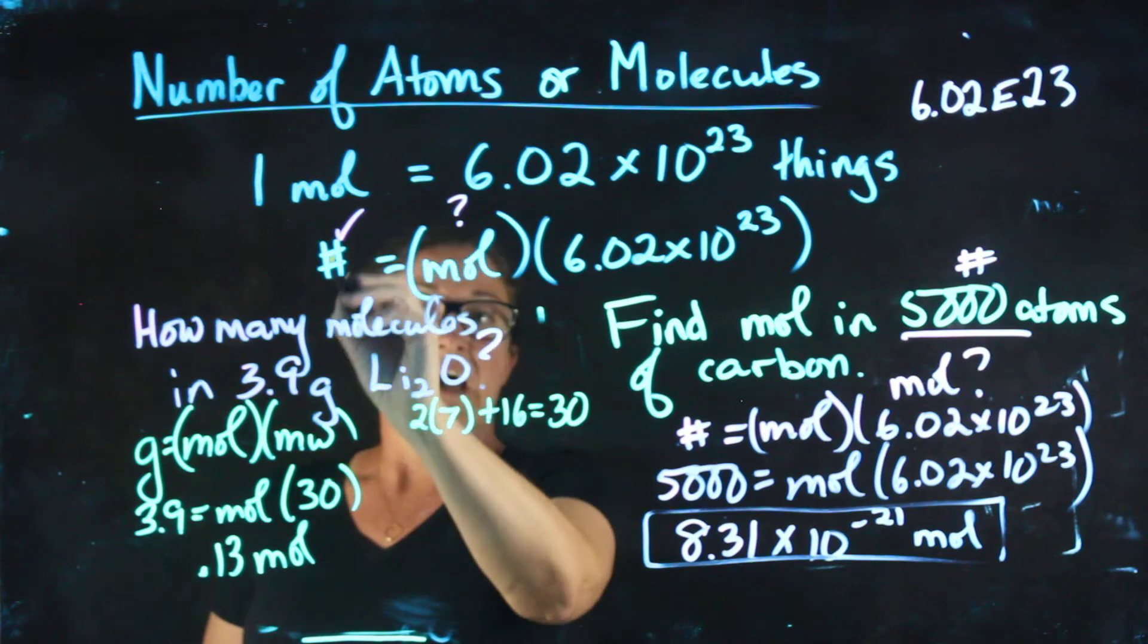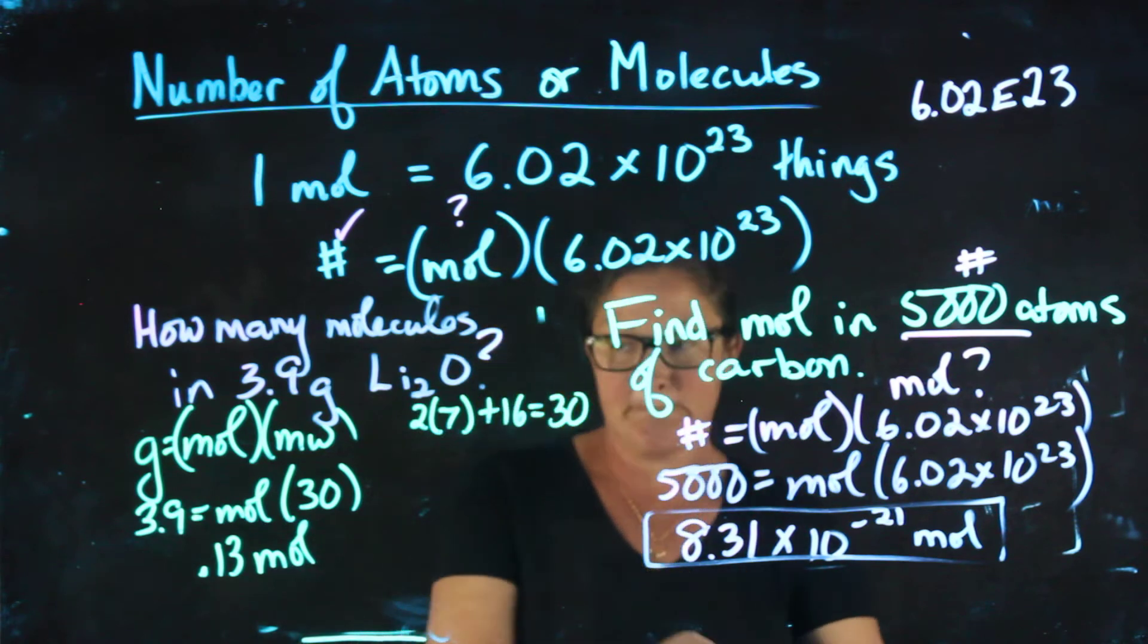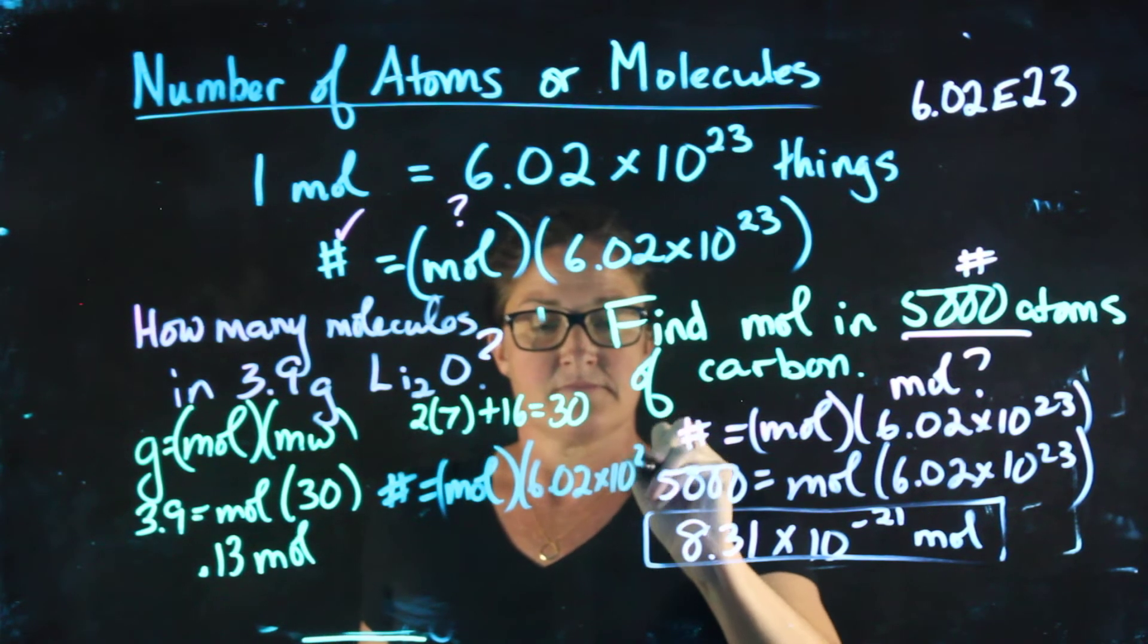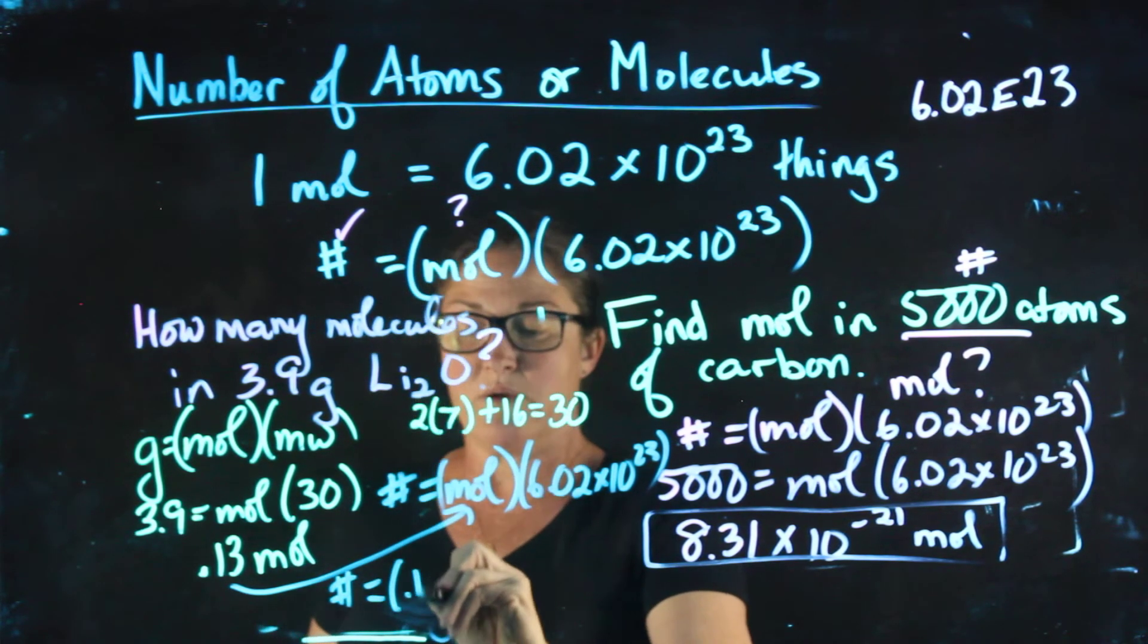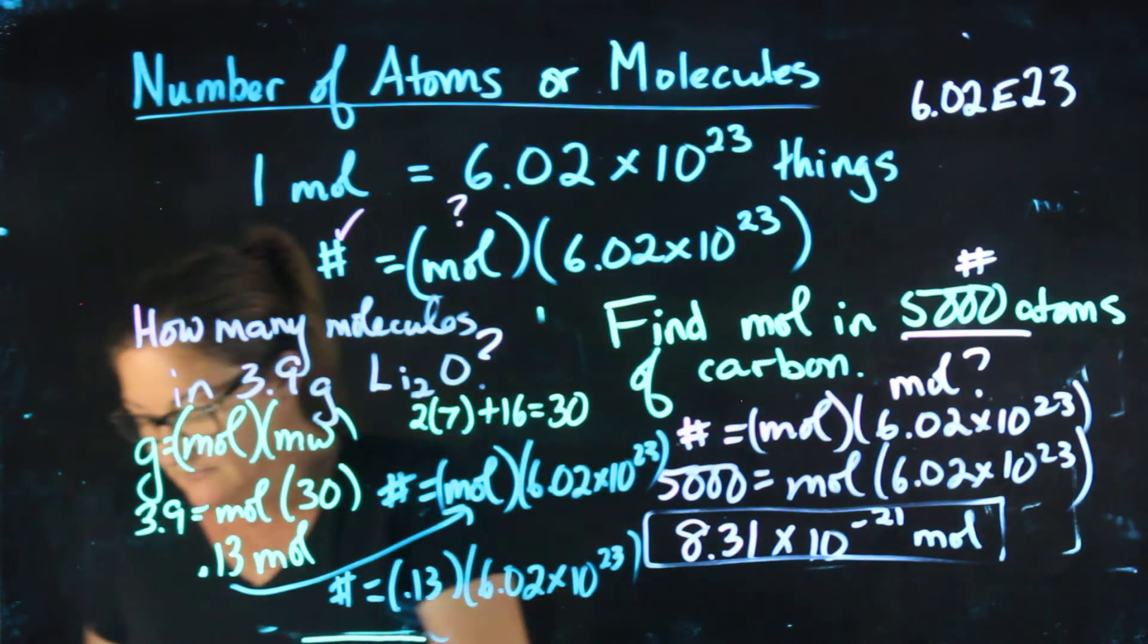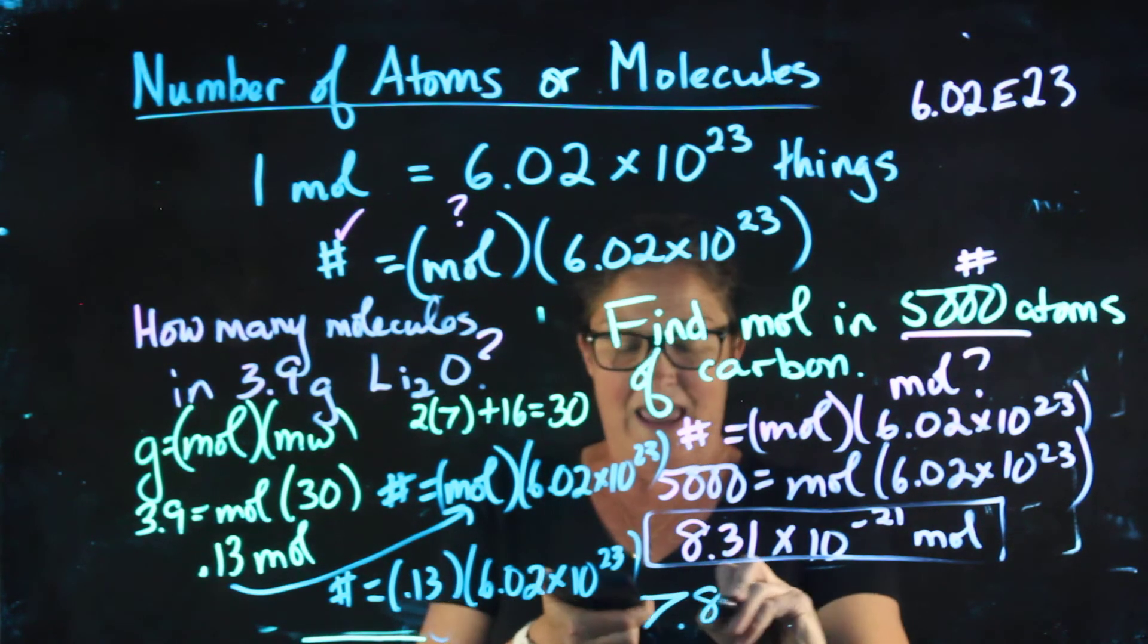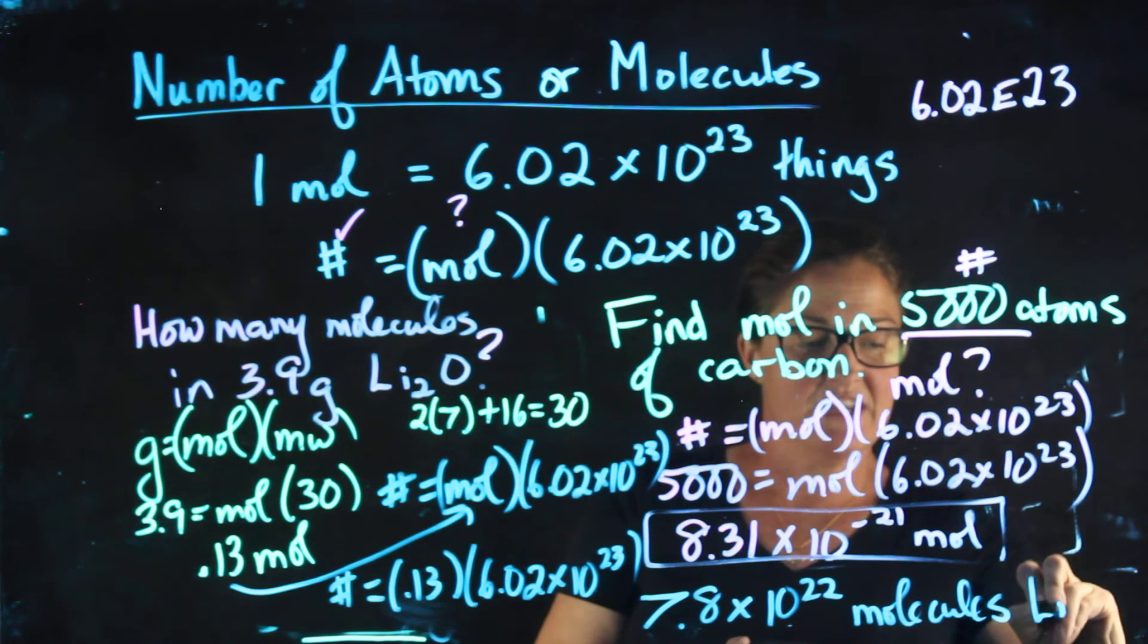Now that I know the number of moles, I can get the number of atoms. So I'm going to use my second formula, which is number equals moles times Avogadro's number. And I'm going to take this and plug it in there. So the number will equal 0.13 times 6.02 times 10 to the 23rd. So my answer times 6.02 E23 yields 7.8 times 10 to the 22nd molecules of Li2O.